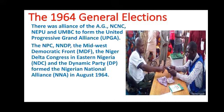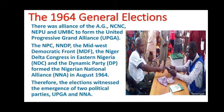These parties came together to form an alliance called the United Progressive Grand Alliance, UPGA. On the other hand, the NPC, NDP, the Midwest Democratic Front, the Niger Delta Congress, the Eastern Nigeria party, and the Dynamic Party also formed the Nigerian National Alliance, NNA. So the parties that participated in the 1964 general elections were just two political alliances.